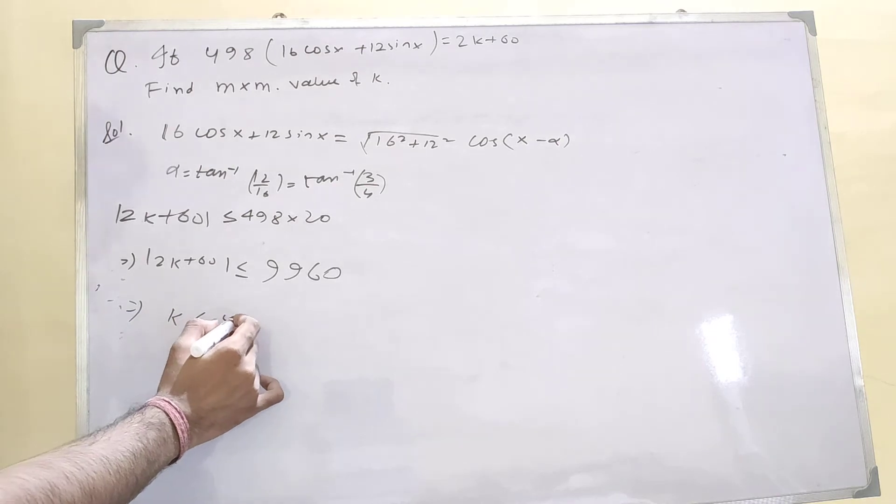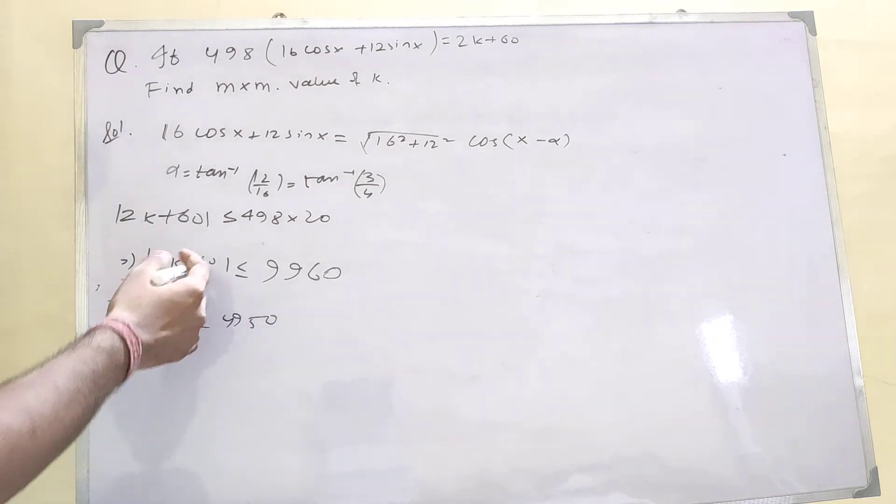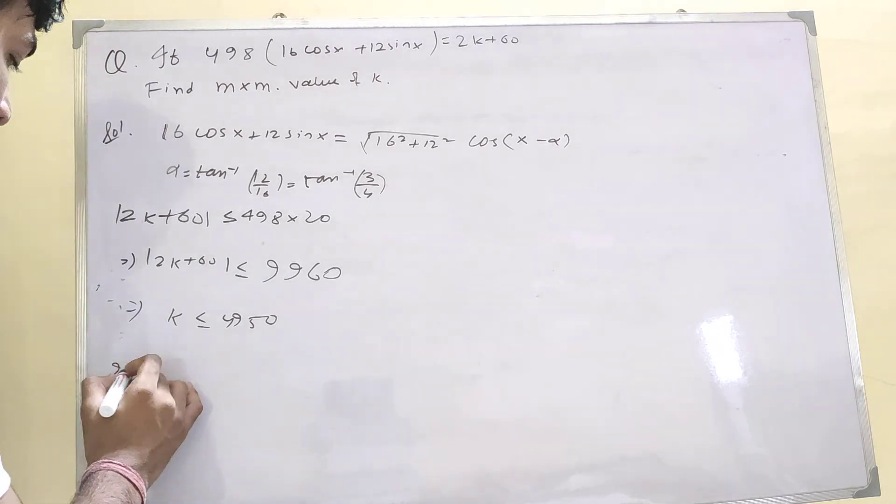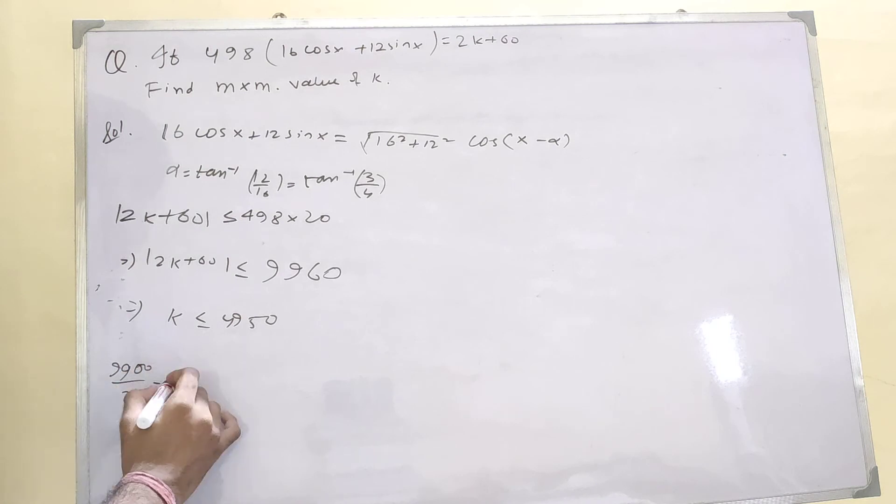So k will be equal to 4950, isn't it? This will be 2k is less than or equal to 9900, and if you divide it by 2, then the answer is 4950. Let's check... yes, this is 4950, we got the answer.